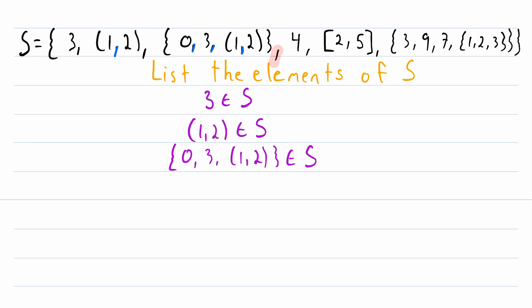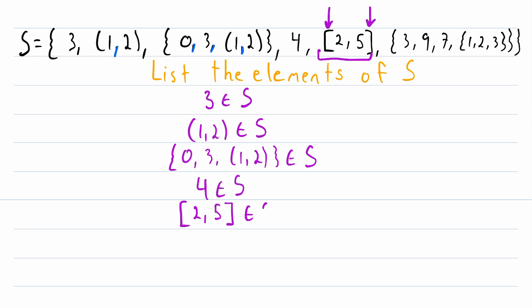Moving on, we've got a comma separating that element, and then simply a 4 followed by a comma — so 4 is an element of S. Then we have an open square bracket, so this element doesn't stop until that square bracket is closed. We see 2, comma, 5, and then the square bracket is closed. So the next element is the closed interval from 2 to 5, and that is an element of S.